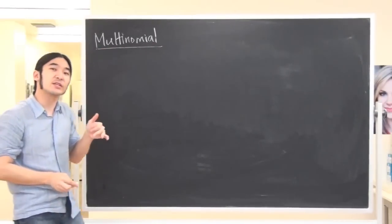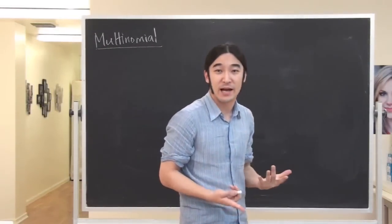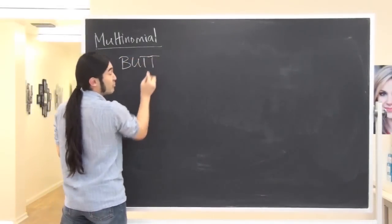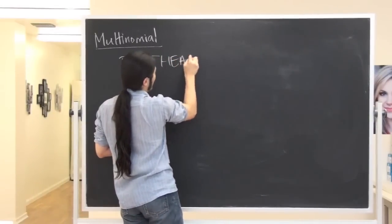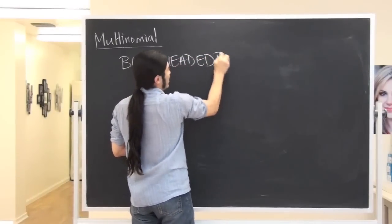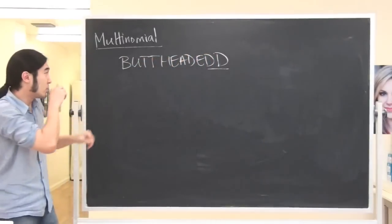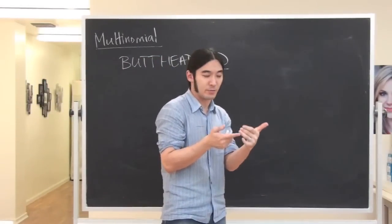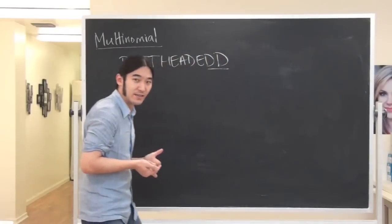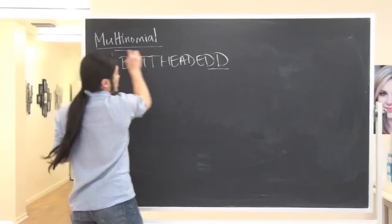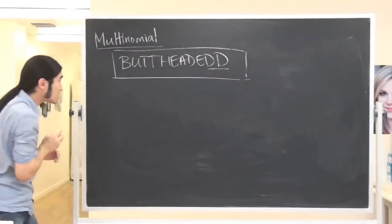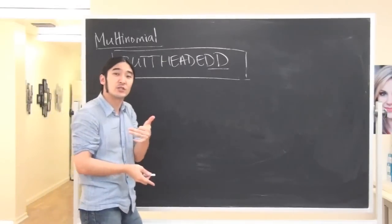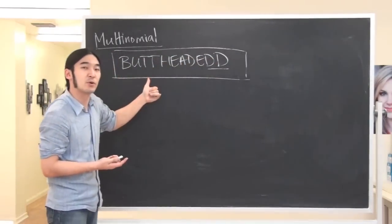I'm going to do two things: first, explain what multinomial means, and then after we get through that, we'll actually apply it to a problem. The best example — let's start with BUTTHEAD, and I'll spell it with two D's just to make a point. It's actually a throwback to what we did in the first part of the review, when we were talking about permutations, combinations, things like that. This is another variation of those sorts of things.